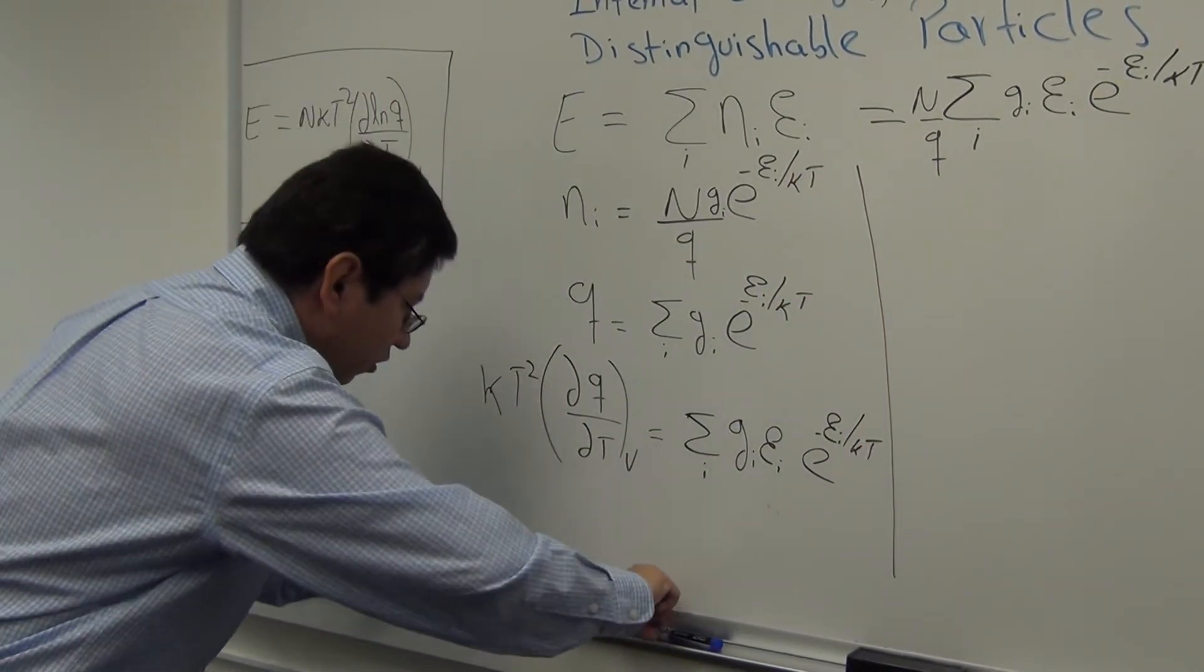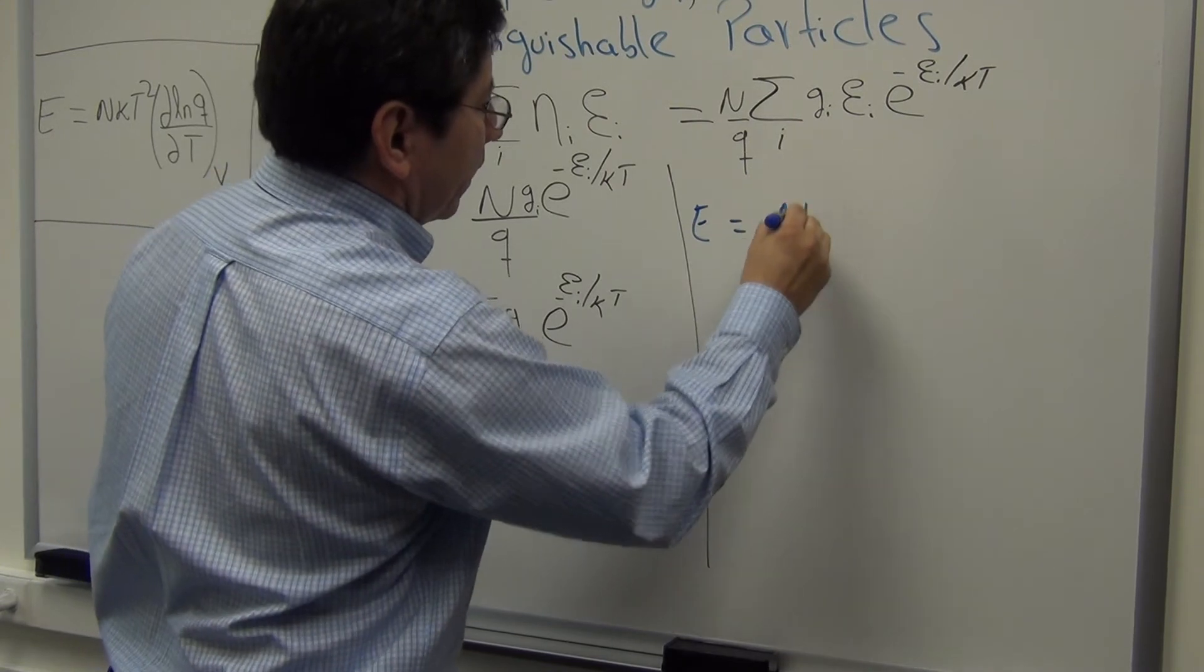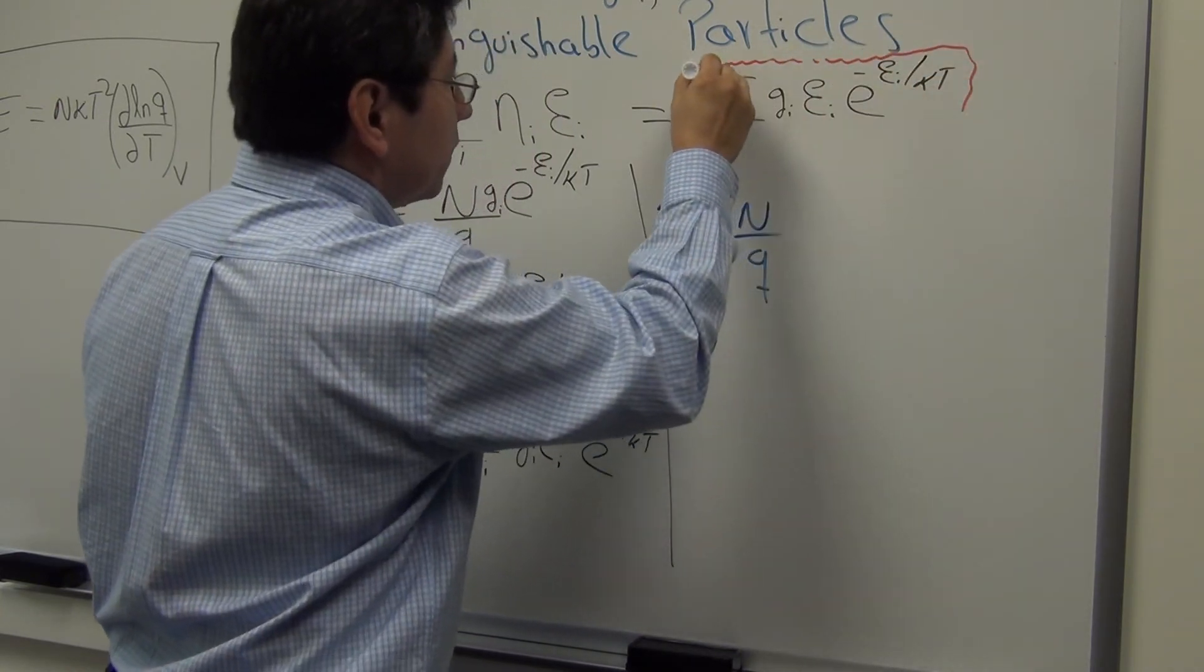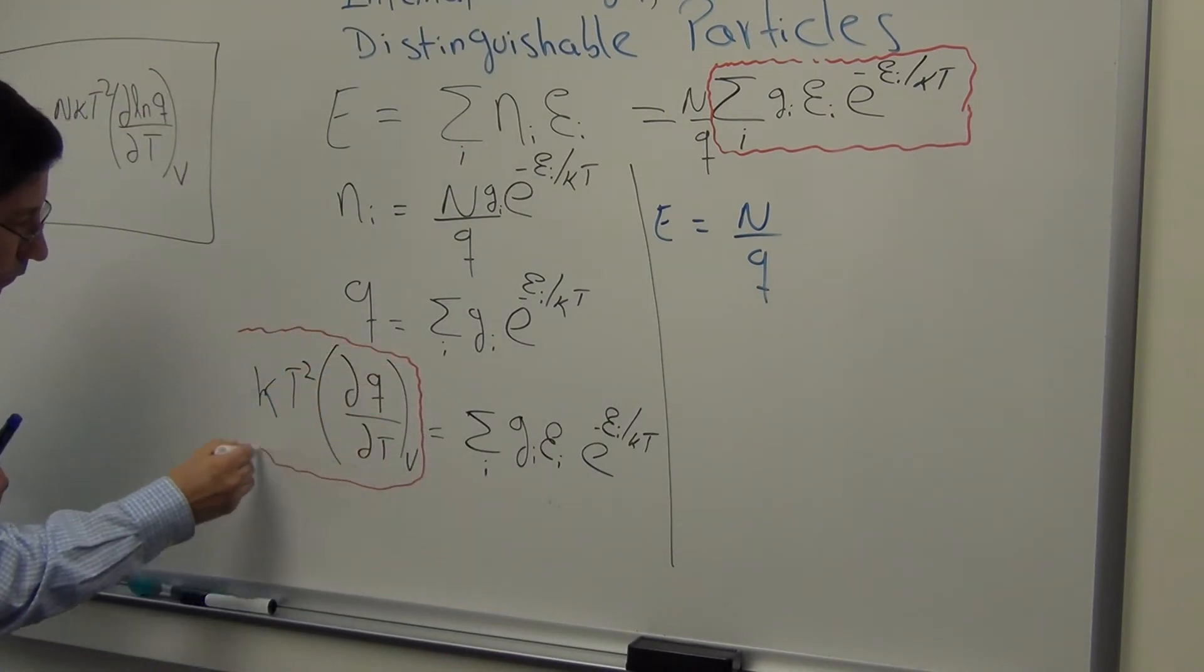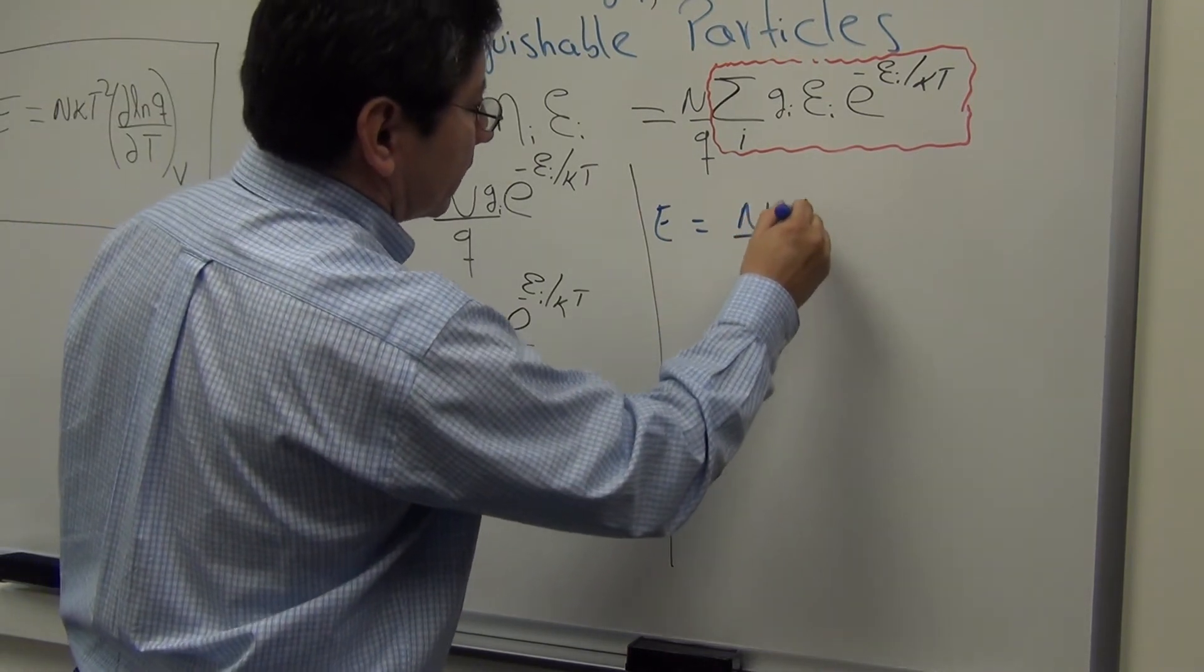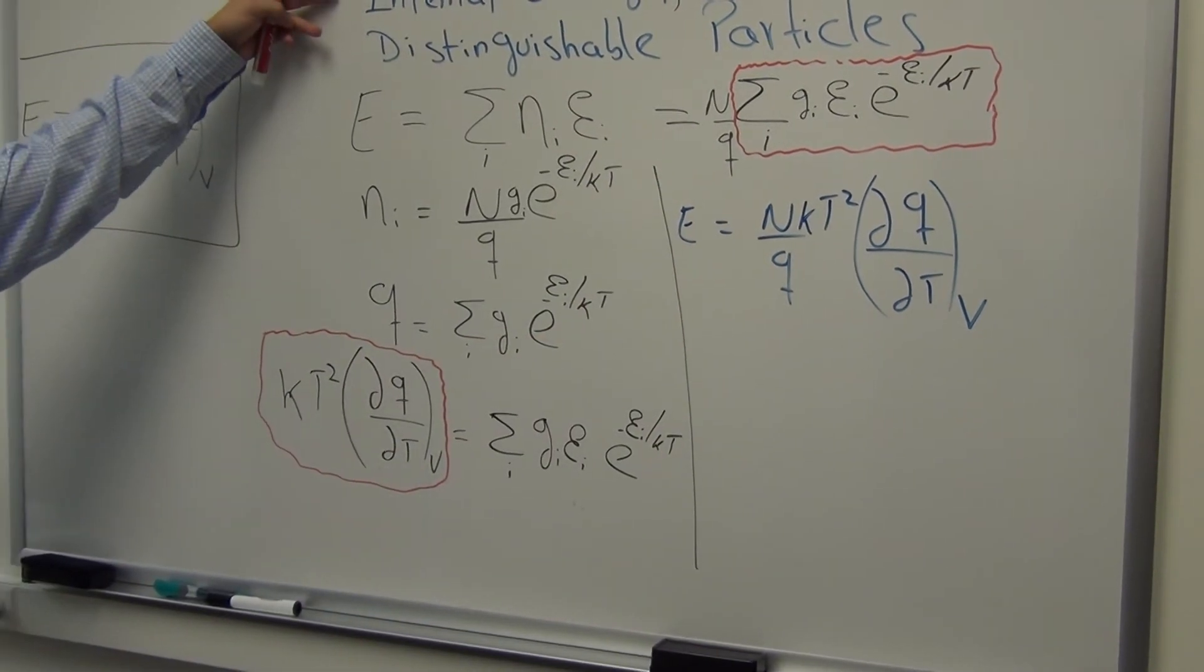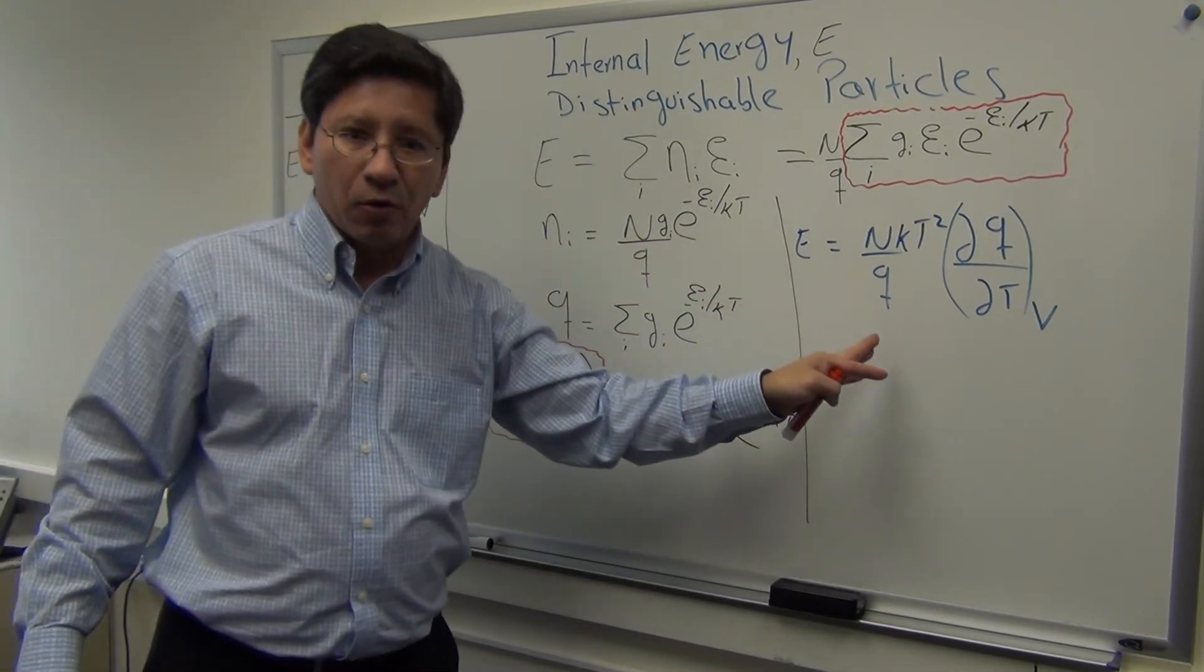So instead of using this sort of cumbersome formula or expression, I can use this in my expression for energy. So let's go back here, let me change colors so that you see the new things going on. So E, then, is equal to N over Q times this expression here. Let me highlight this. This one is or can be replaced by this one now, since we show that they are identical. So then this is equal to N KT squared DQ DT constant V. So in terms of the goal of expressing the internal energy of a system consisting of distinguishable particles, we achieve our goal.